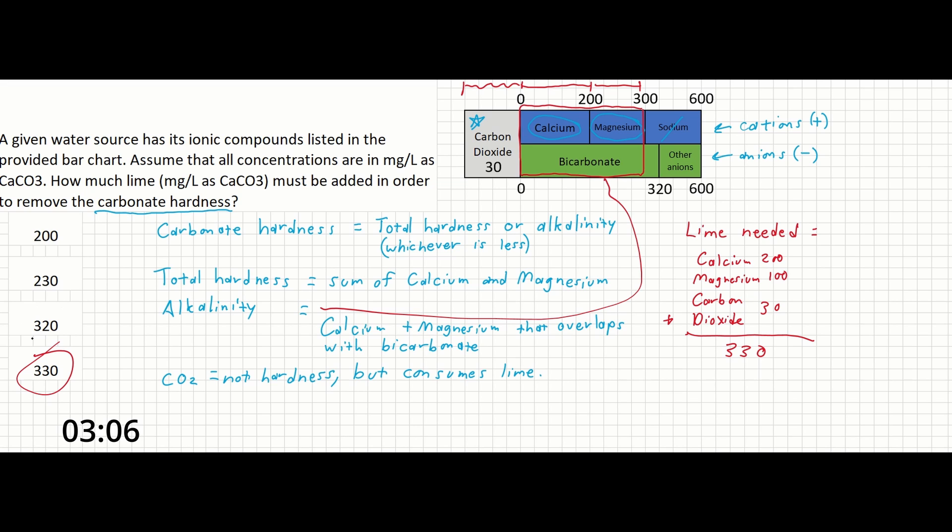And finally, you might select 320 if you assume that all of the bicarbonate, even the amount beyond the sum of the calcium and magnesium, are what contributes to hardness.